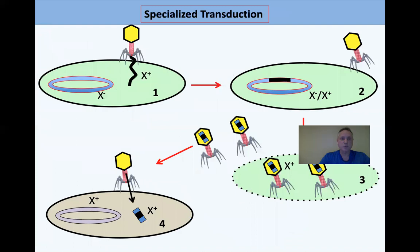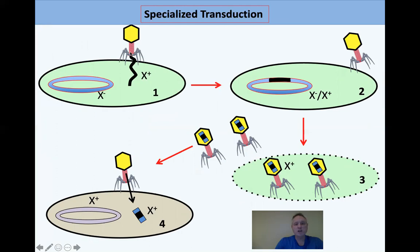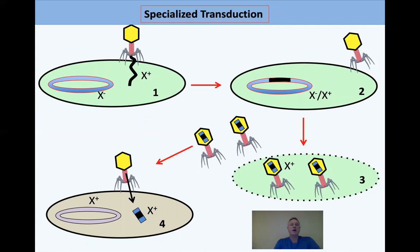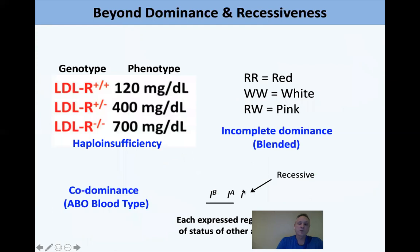Bacterial cells are truly haploid but you can make them diploid this way. We also see this with viruses in specialized transduction, where a phage injects its X-plus DNA into an X-minus host bacterium, generating a cell that's X-minus X-plus. When the phage propagates and excises, it may carry out part of the chromosome with the X-plus allele and deliver it to a new bacterium, creating a merodiploid.